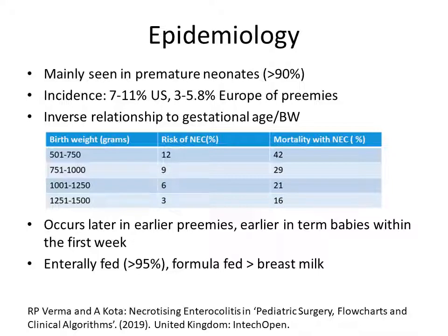In very early premature babies, such as 24 or 25 weeks, NEC tends to occur later — around a corrected gestational age of about 30 to 32 weeks. However, if it is a term baby, NEC generally occurs very early, within the first week of life. More than 95% of babies with NEC have been enterally fed, and formula-fed babies are affected more than breastfed babies.